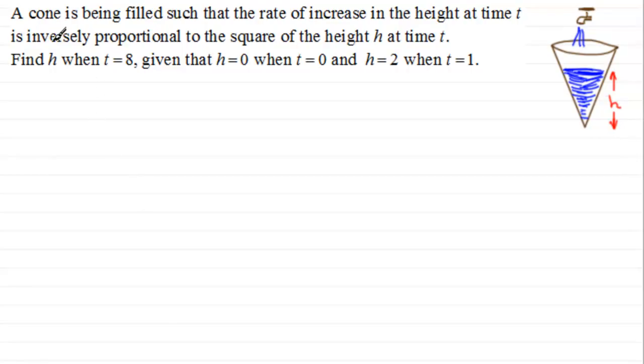Let's run through it. We've got a cone being filled such that the rate of increase of the height at time t is inversely proportional to the square of the height h at time t. We need to find h when t equals 8, given that h equals 0 when t equals 0 and h equals 2 when t equals 1.